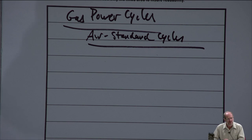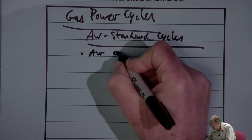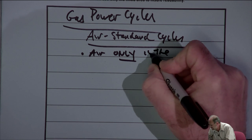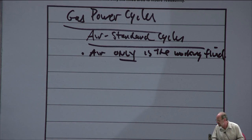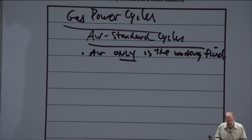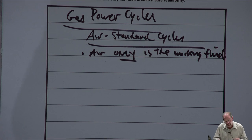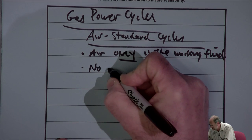Air standard cycles are a simplification for gas power cycles. We're going to assume that even though we know we really have a mixture of gases, we're just going to assume it's only air. So air only is the working fluid — the substance actually moving through the system that ultimately provides work. That's not real, but this assumption will give us the ability to reasonably accurately analyze certain types of cycles. No combustion gases, no air-fuel mixtures — it's air only.